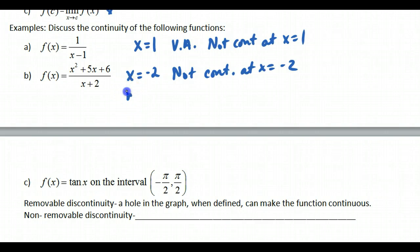And if you remember, we get a hole if we can factor and cancel. So this is x plus 3, x plus 2, over x plus 2.